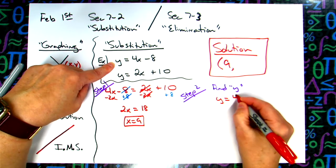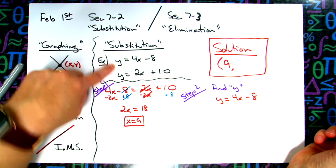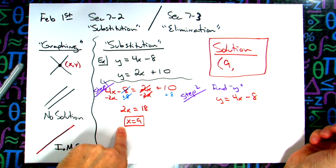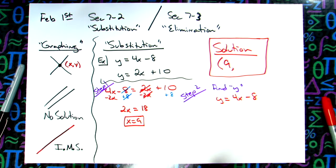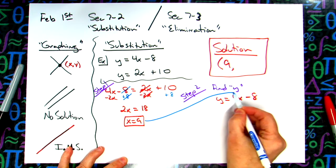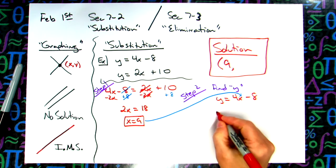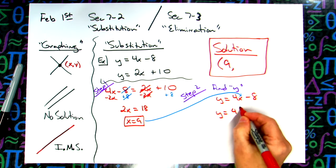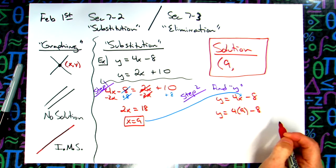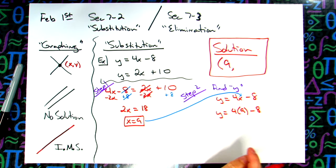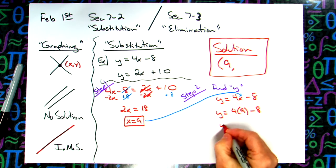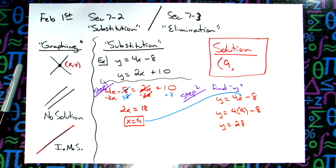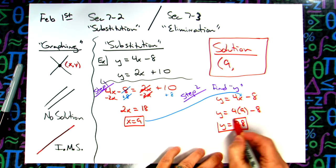So y equals 4x minus 8. I know what x is, so I can put x in. I can put that 9 in for that x right there. So then I'm going to have y equals 4 times 9 minus 8. 36 minus 8. Let me double check: 36 minus 8. Yep, it's 28.